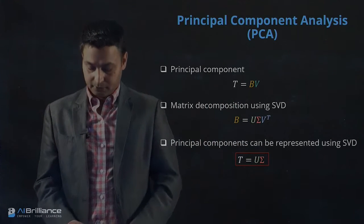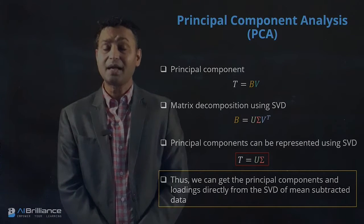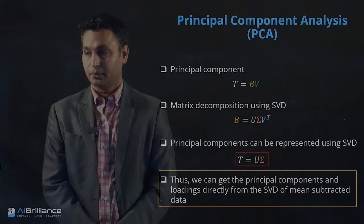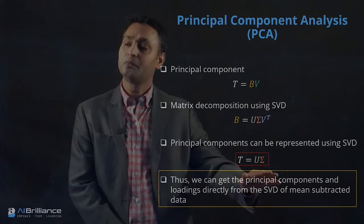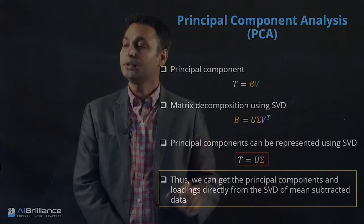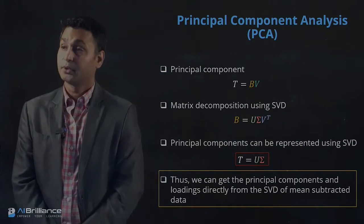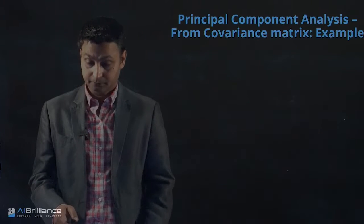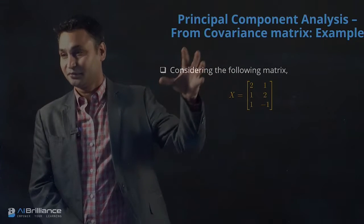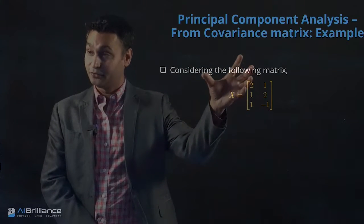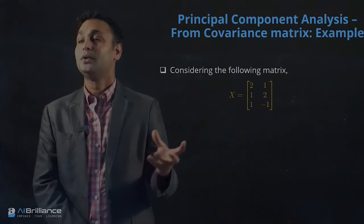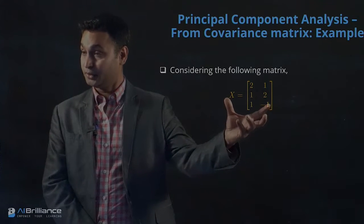So now what we can do is take example problems and see how these two different approaches work. One of the primary methods used for principal component analysis is essentially using the singular value decomposition idea. Let's take the same example problem that we have been carrying. The matrix we are using is the same because we have done the SVD of this matrix previously in the SVD portion of this lecture, so we know what the singular value decomposition of this matrix is.